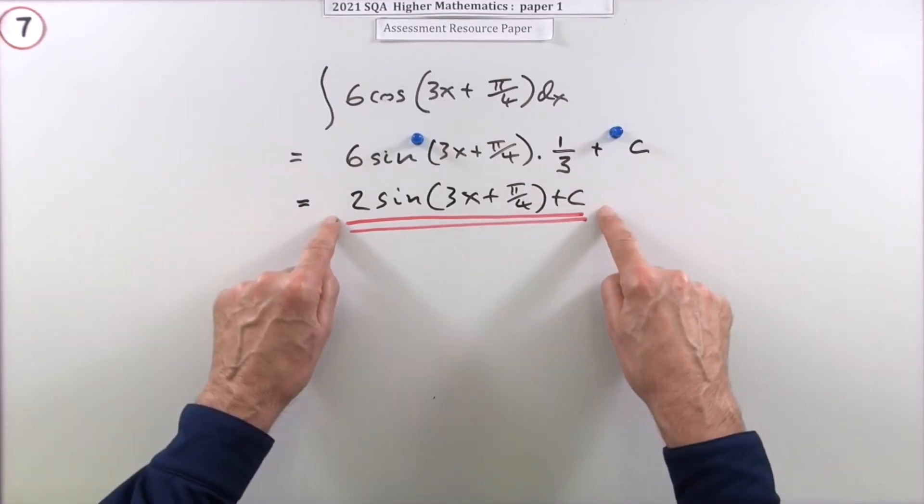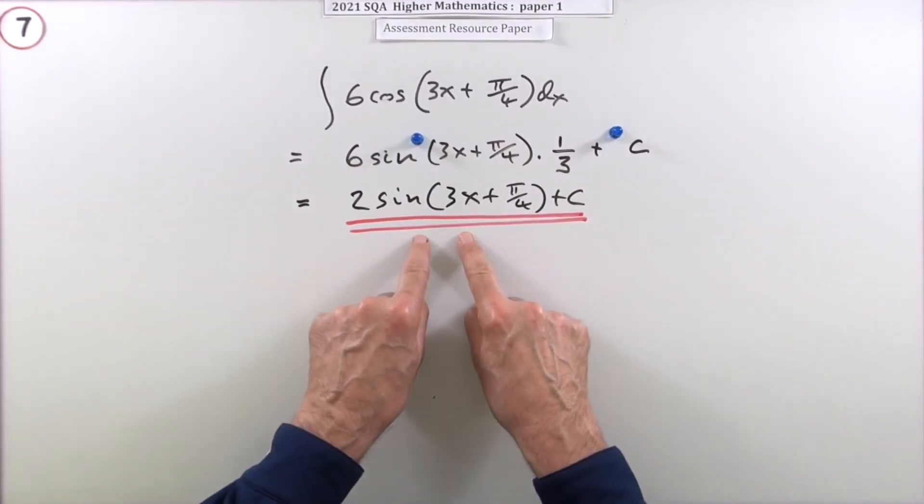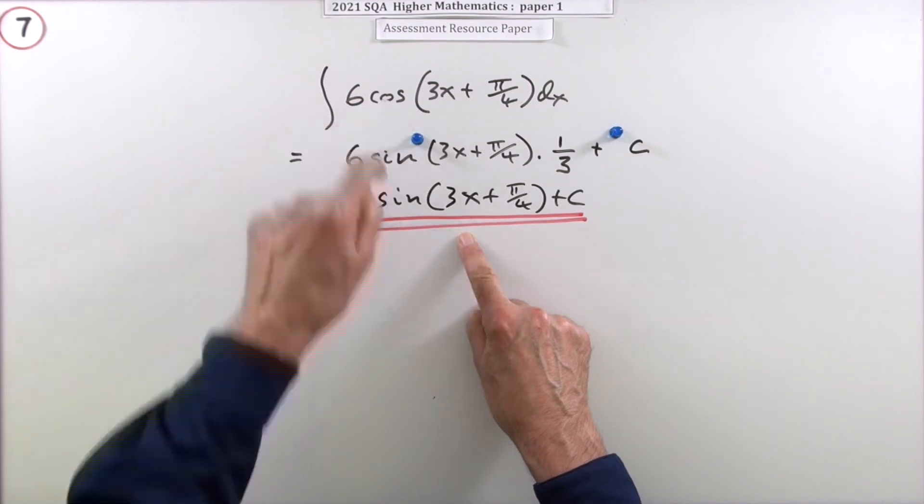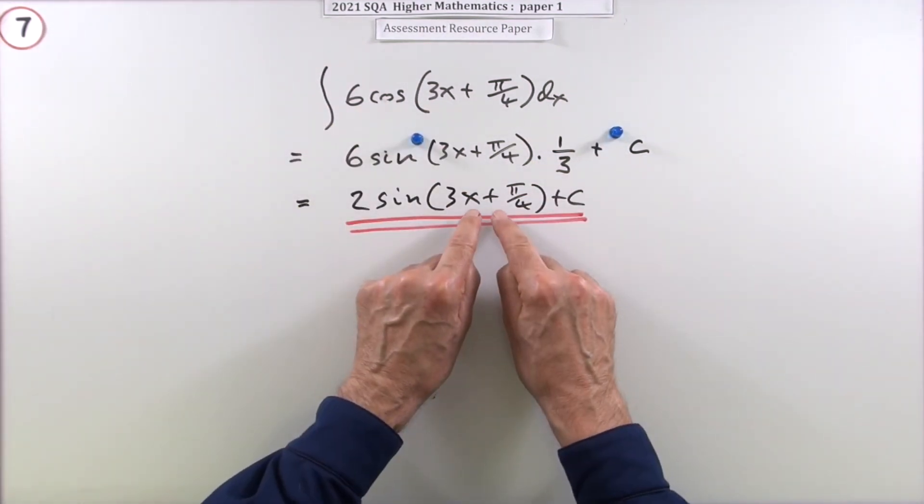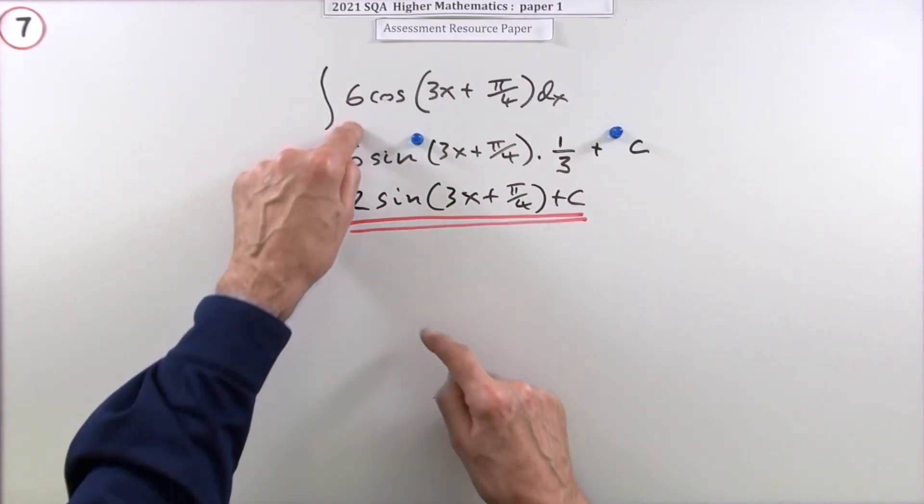So you can always check if that's correct just by differentiating that. If you were to differentiate that, well, the sine would go back to a cos. Yep, the two would stay as a two. But then you would multiply by the inner derivative and the three times that two would give you that six. So that was a quick wee question.